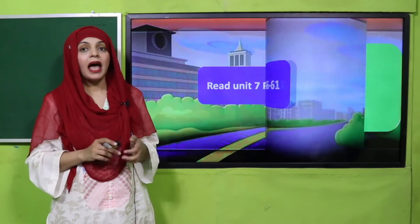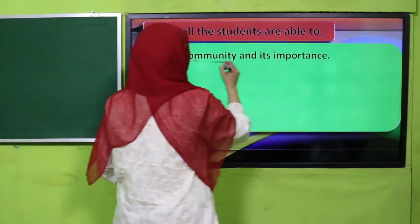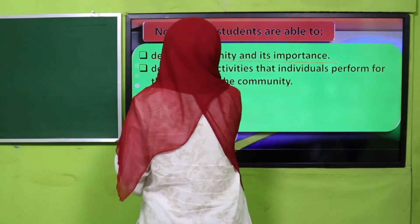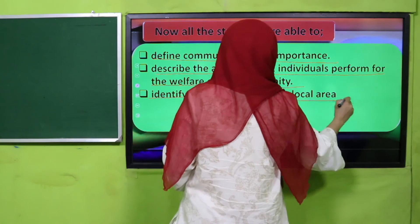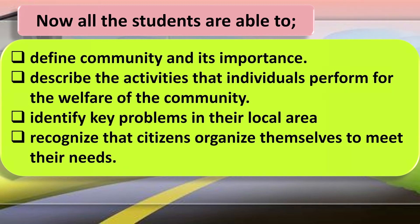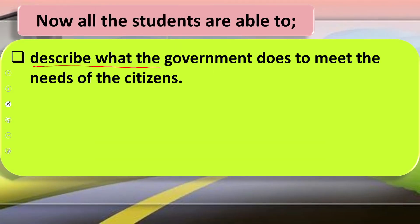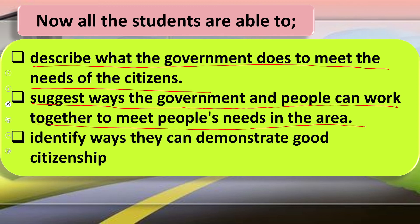Now all students are able to: define community and its importance; describe the activities that individuals perform for the welfare of the community; identify the key problems in their local area; recognize that citizens organize themselves to meet their needs; describe what the government does to meet the needs of citizens; suggest ways the government and people can work together to meet people's needs; and identify the ways they can demonstrate good citizenship.